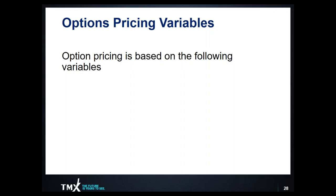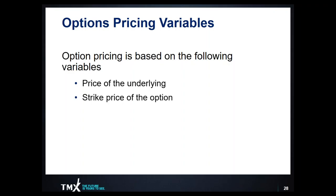The first consideration in how an option is priced is the price of the underlying security. As the stock goes up and down in value, the option contract will move up and down relative to its strike price, expiration date, and whether it's a call or put option. Second is the strike price of the option contract — the closer the strike price is to the current price of the underlying security, the more heavily influenced that contract will be when the stock moves. We cover this in more detail when presenting on options Greeks.